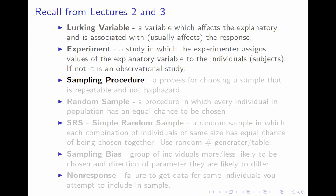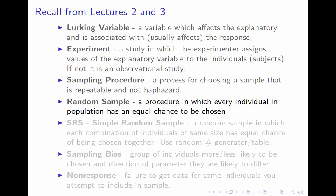We also talked about sampling procedures. A sampling procedure is a process for choosing a sample. It needs to be repeatable and not haphazard — I need to know how to do it multiple times and be able to figure out the chance of each individual showing up in that sample. The best kind of sampling procedure is a random sample, one in which each individual in the population has an equal chance to be chosen.